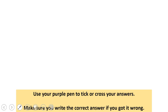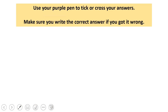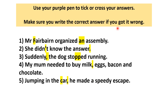Okay, it's time for you to make your purple pen corrections. Give it a tick if you got it right; if you got it wrong, make sure you give it a cross and make any further corrections. Let's go through some of these answers. So number one: Mr Fairbairn organised an assembly. You need a capital F for Fairbairn because it is a proper noun.